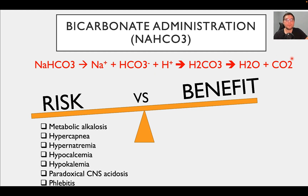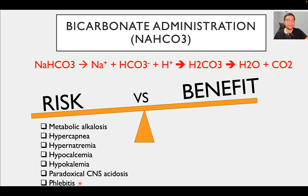CO2 is a much smaller molecule, so it can easily diffuse across this barrier, leading to excessive accumulation of CO2 inside the CSF but not much bicarbonate. As a result, that CO2 combines with water in the CSF and leads to hydrogen ion accumulation — the paradoxical CNS acidosis. Finally, sodium bicarbonate solution is typically very hyperosmolar unless diluted with fluid, and that may be very irritating to the vein.